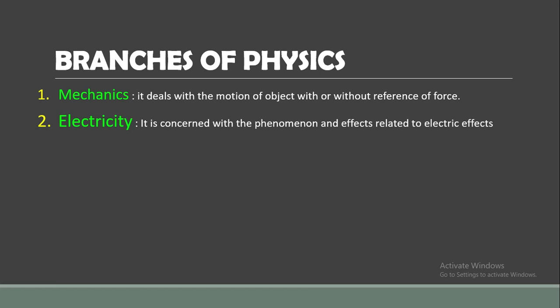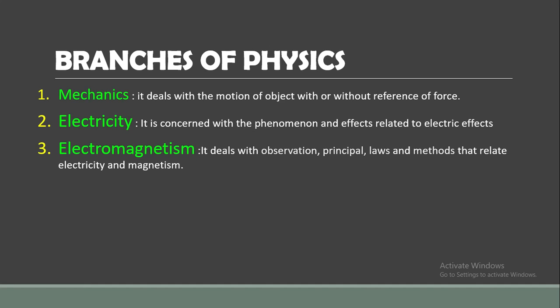Number two is Electricity. It is concerned with the phenomenon and effects related to electric effects. Is branch mein hum electric current ke baare mein padhte hain. Electromagnetism deals with observations, principles, laws and methods that relate electricity and magnetism. Is branch mein hum electricity aur magnetism ke aapas ke relation ke baare mein padhte hain.